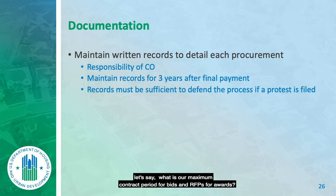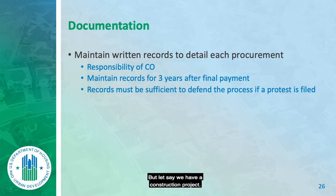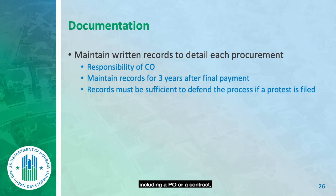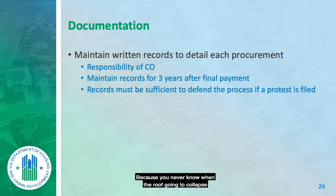The maximum contract period for bids and RFP awards is five years, except for legal contracts which are limited to three. For construction projects, I keep the file for that year plus three years after. But I never throw construction documents away — I either scan them or file them away permanently. You never know when a roof might collapse and you need documentation to protect yourself.